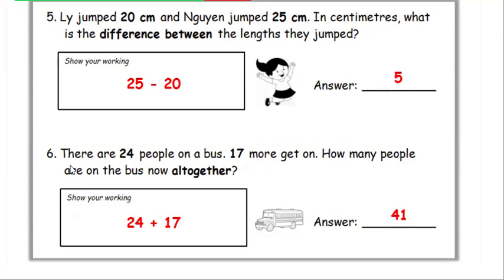Number 6. There are 24 people on a bus. 17 more get on. How many people are on the bus now all together? Working: 24 plus 17. Answer: 41.